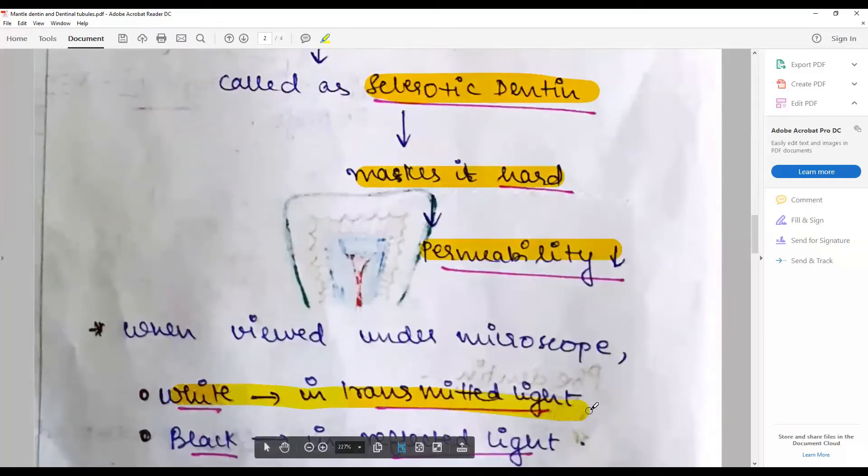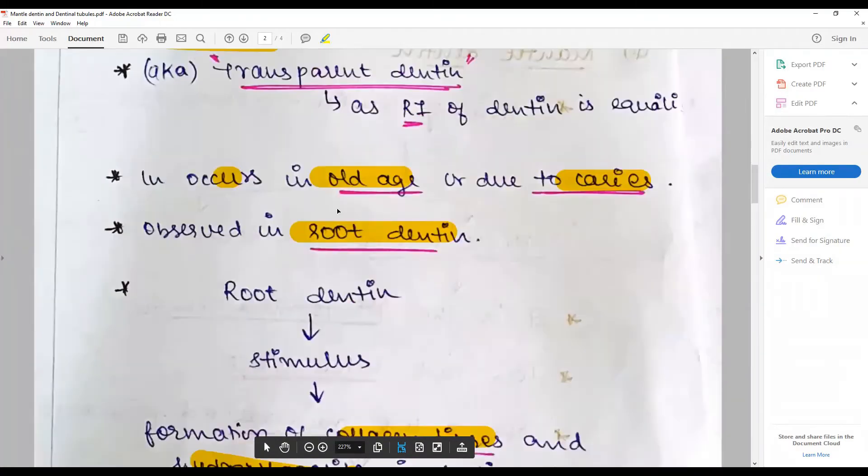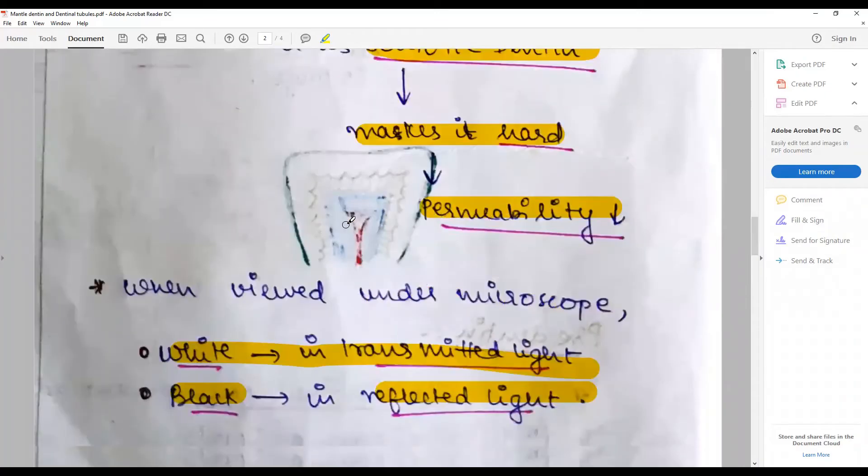Hence it becomes very hard with decreased permeability. They appear white in transmitted light and black in reflected light. That makes our discussion on sclerotic dentine associated with age.